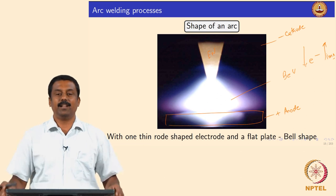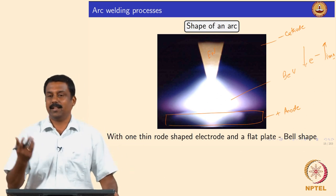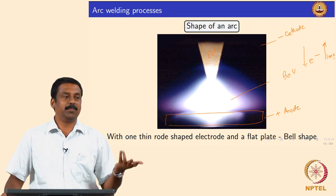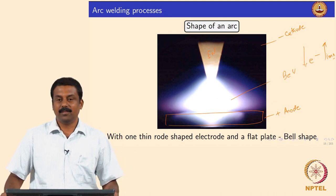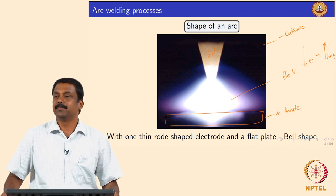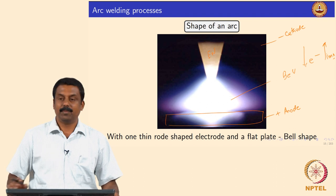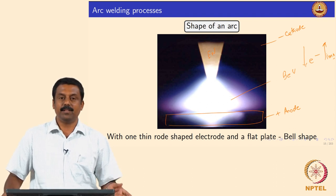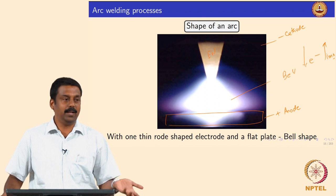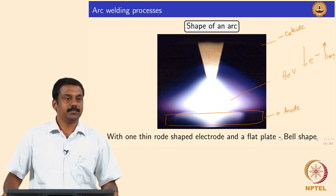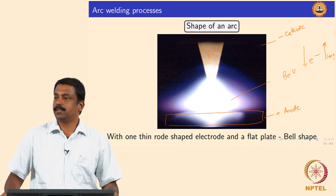Suppose you want to weld steel — you can use DC. If you use a consumable welding process, polarity choice can vary. However, in a non-consumable welding process it is always advisable to have the electrode negative, so that you do not superheat or erode the electrode.